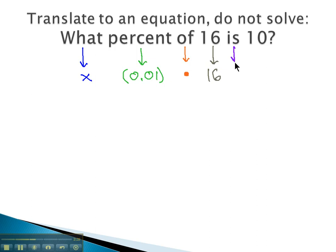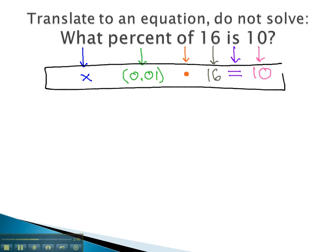Is, we said, translates to equals. And finally, 10, already a number, goes right into our equation. And what we've done is we've created an equation we could use to answer the question, what percent of 16 is 10? X times 0.01 times 16 equals 10. Solving that for x would tell us our solution.